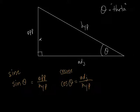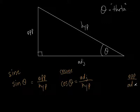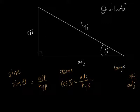The other comparison is the opposite side to the adjacent side. We call this the tangent. We use the first three letters, T-A-N, but we say 'tangent of the angle.' The tangent is the opposite over the adjacent. So we've compared opposite to hypotenuse (sine), adjacent to hypotenuse (cosine), and opposite to adjacent (tangent).